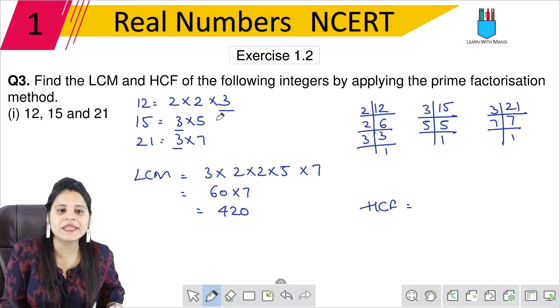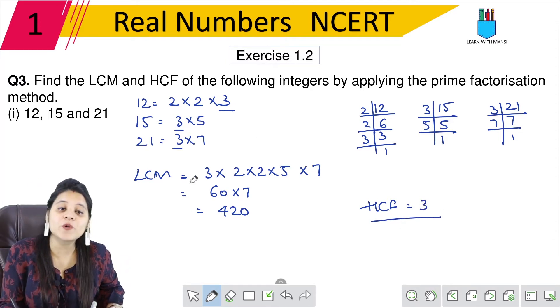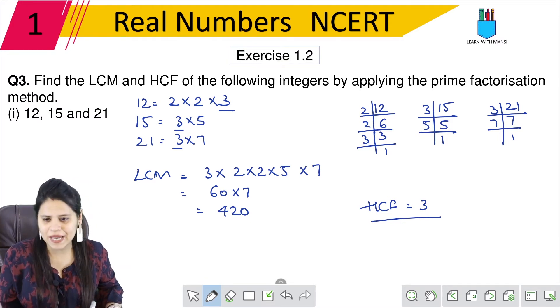What will HCF be? What is common? Only 3 is common. So we have 3 as HCF. If nothing were common, HCF would be 1. Then we will come to the next part.